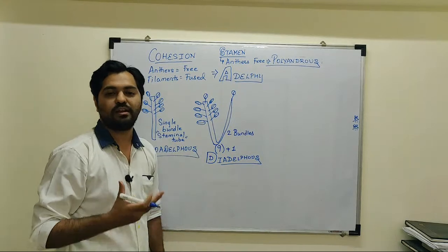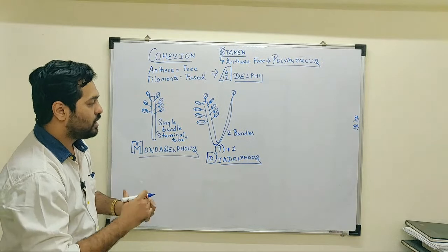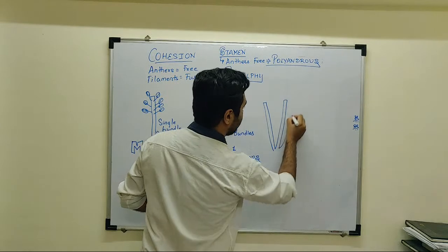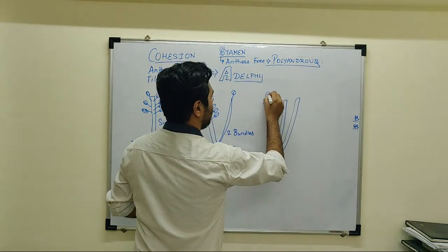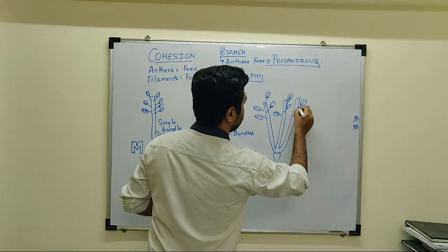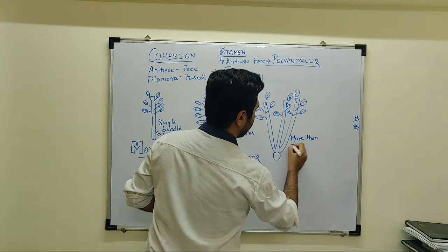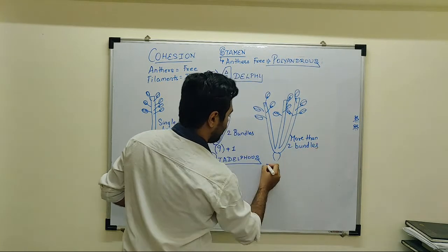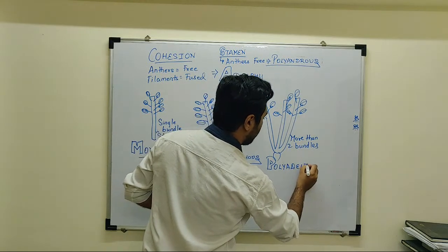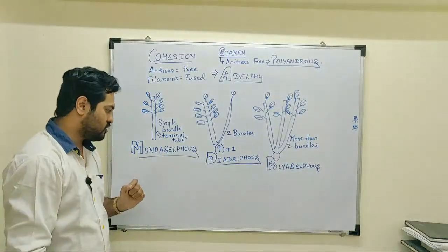The nine-plus-one specific arrangement is observed in a particular plant which I'll discuss as an example later. A third possibility observed is wherein the filaments are fused to form three bundles, and the anthers remain free. So when there are more than two bundles of fused filaments, such a condition is known as polyadelphous. So in Adelphi we have observed three types of arrangement: monadelphous, diadelphous, and polyadelphous.